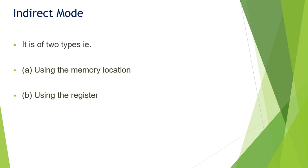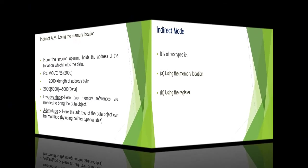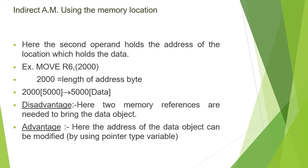The processor goes through the given path or link to find the actual object address, then goes to that address and collects the object value, which is the actual operand value. Normally it is of two types: indirect addressing mode using memory location, and indirect addressing mode using register. For finding the target value it needs two or more addresses. If the target address is present in a memory location, then this type is known as indirect addressing mode using memory location.